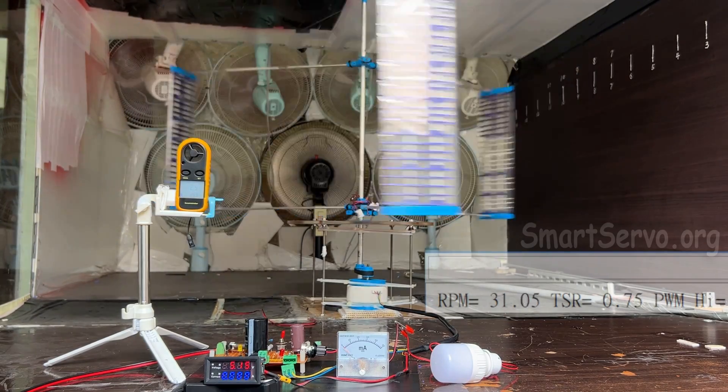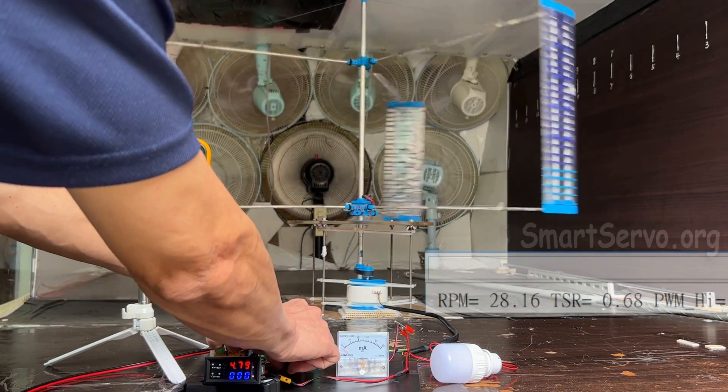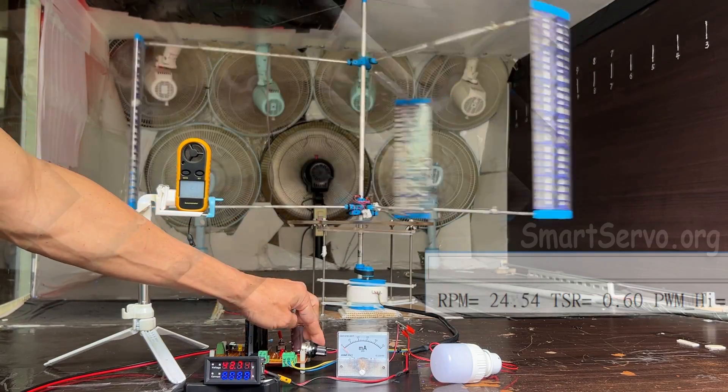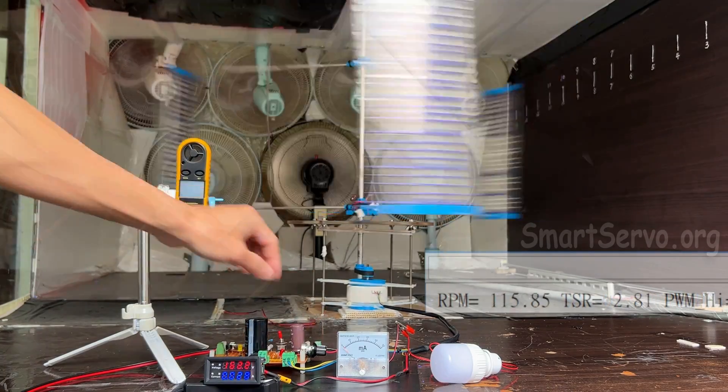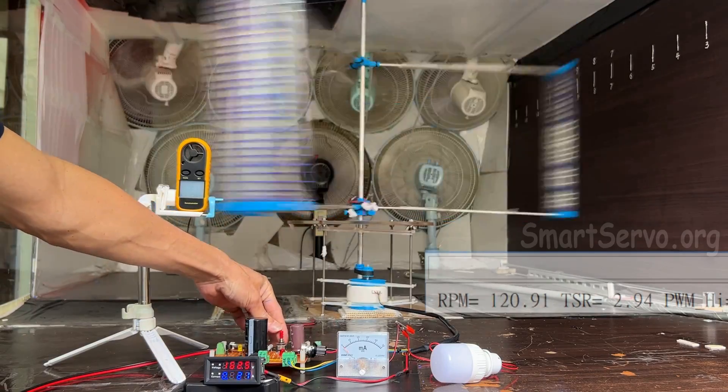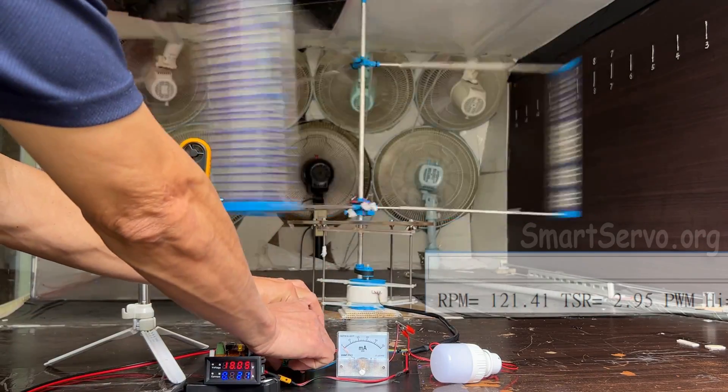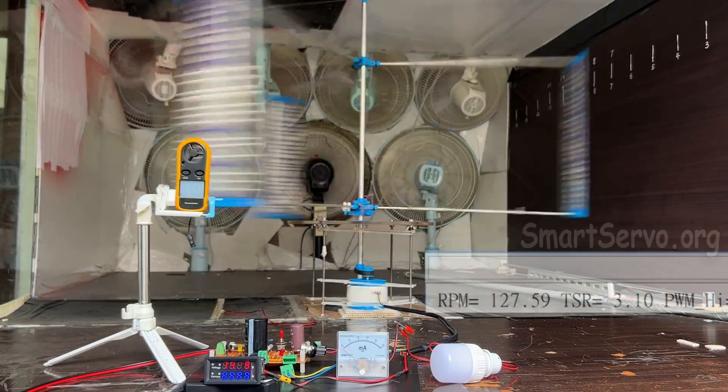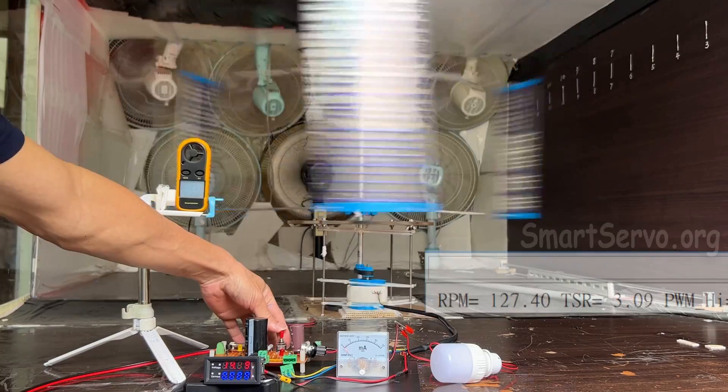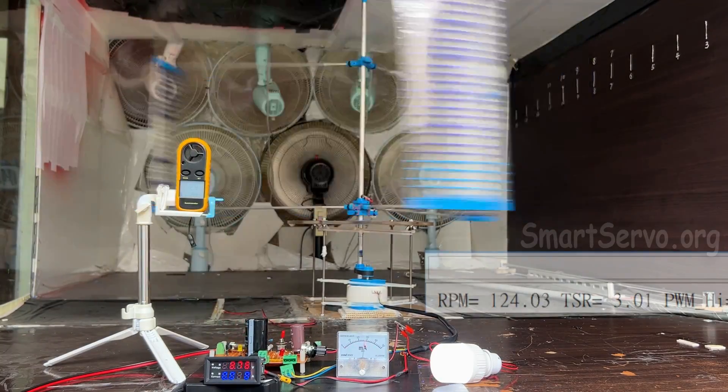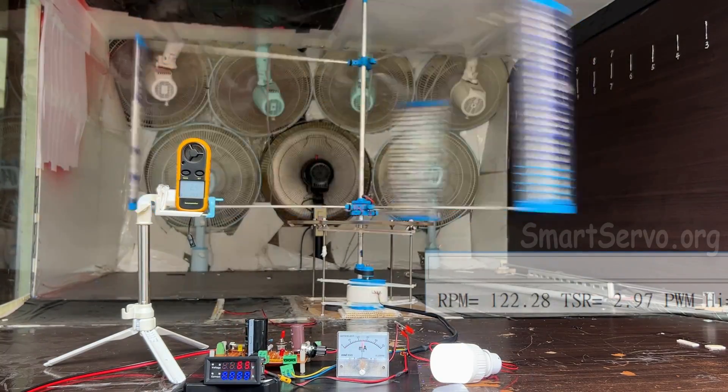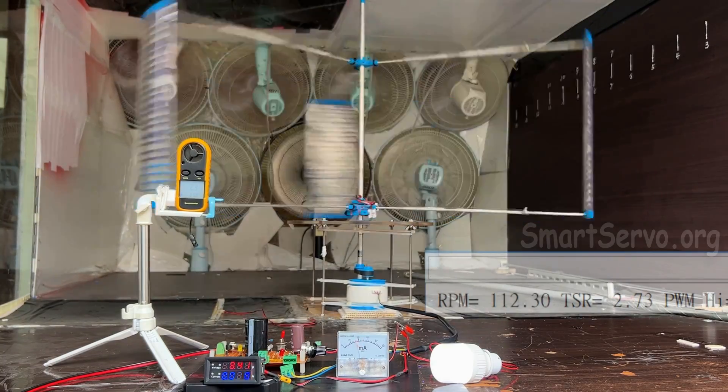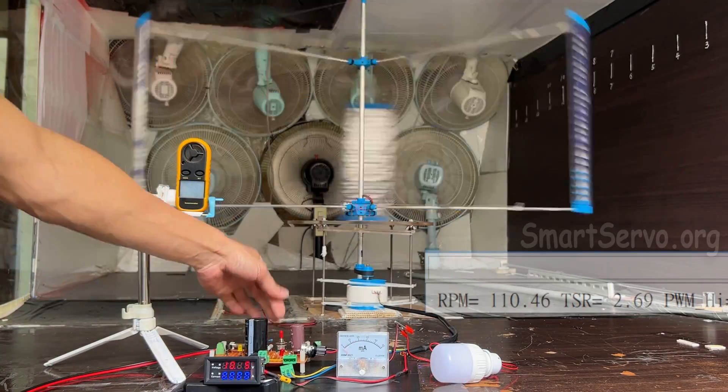Can we still generate electricity? Of course there is a way. Start the wind turbine again, accelerates to 120 RPM, stop the motor. Speed increased to 127 RPM. Start generating electricity. The speed begins to decrease. When it reaches 110 RPM, just cut off the load.